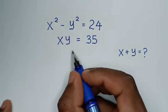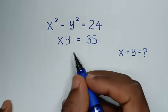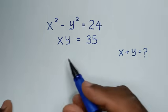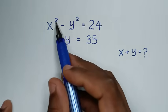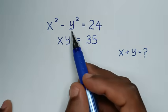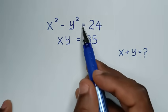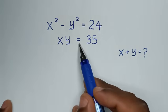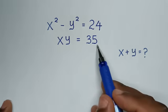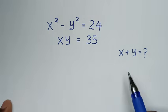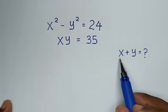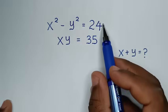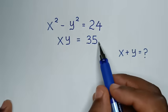Hello, you are welcome to solve this math problem: x squared minus y squared is equal to 24, and xy is equal to 35. We need to find the value of x plus y from these two systems of equations.